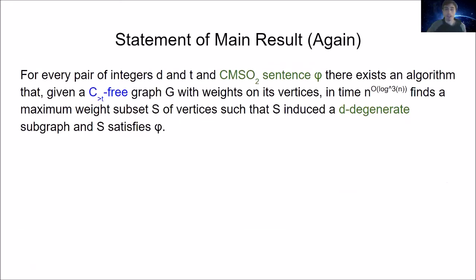Let me restate the main result. For every pair of integers D and T and a CMSO₂ sentence φ, there exists an algorithm that given a C_{>t}-free graph G with weights on its vertices, finds in quasi-polynomial time a maximum weight subset S of vertices such that S induces a D-degenerate subgraph and S satisfies φ — meaning when we plug S into φ, φ evaluates to true.